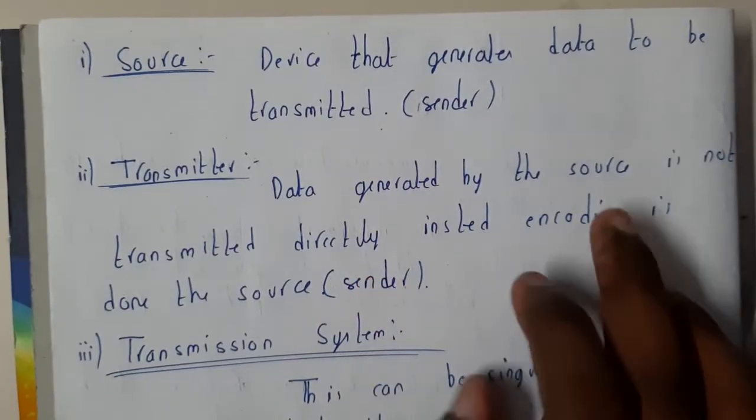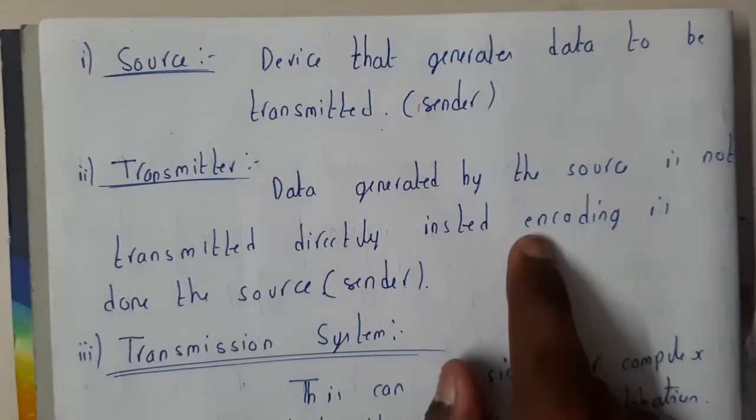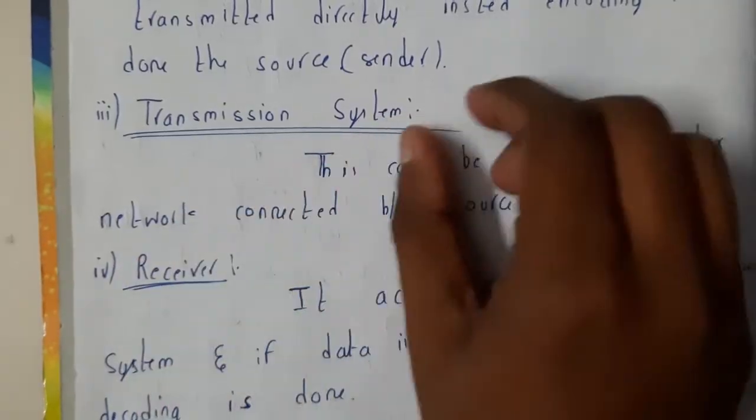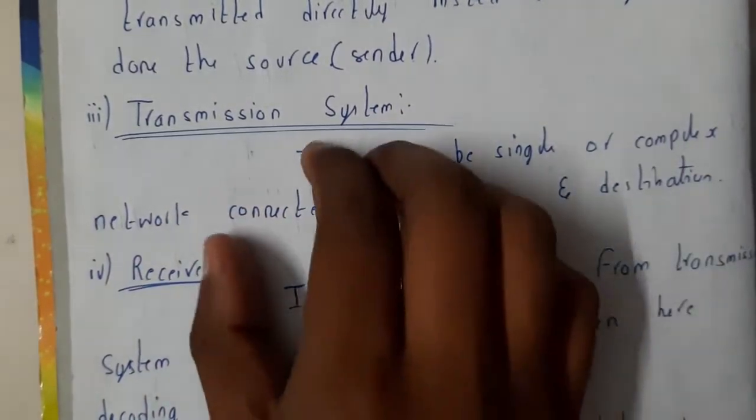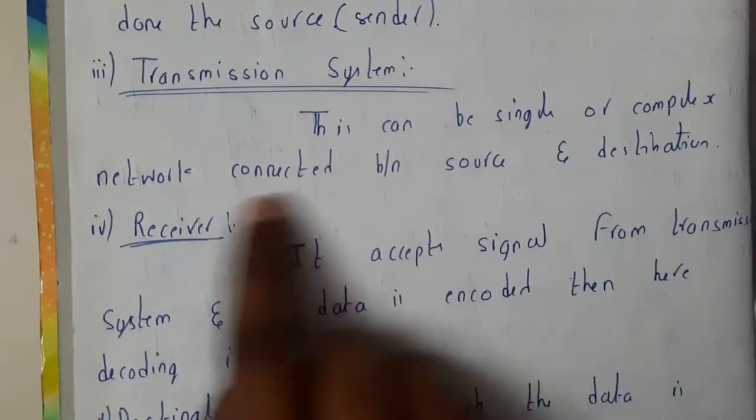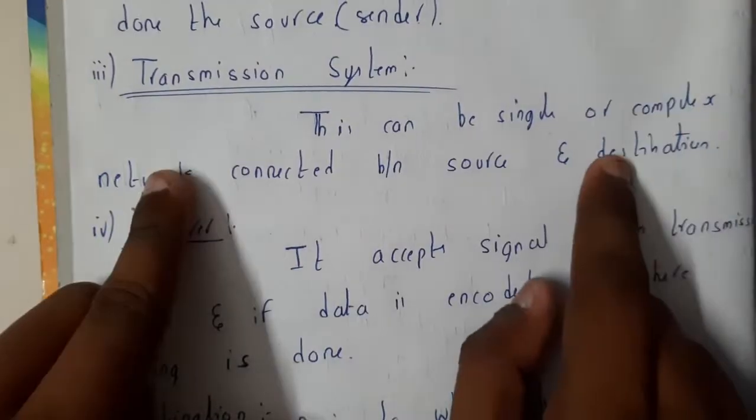The transmitter does the encoding. The transmission system transmits bit by bit or a complete pack of bits like 8 bits or 4 bits. This can be a single or complete complex network connected between the source and destination.